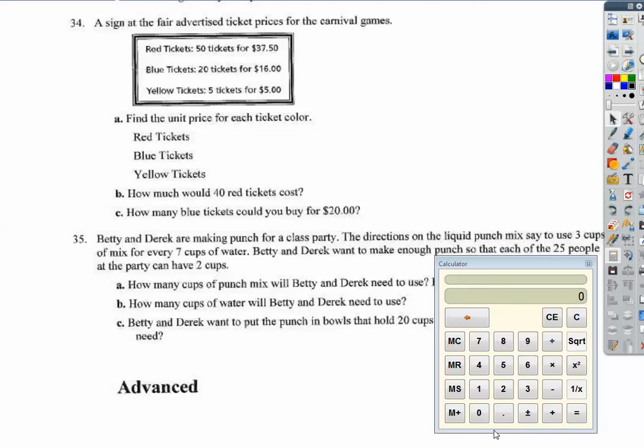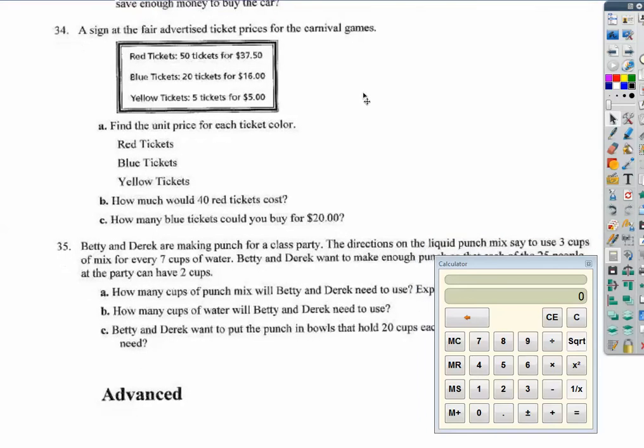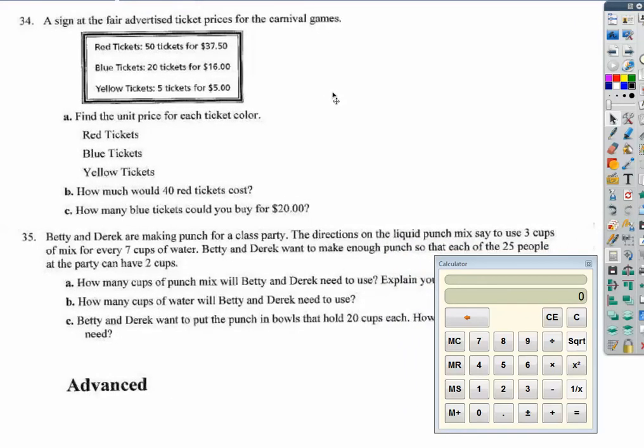Number 34. A sign at the fair advertises ticket prices for the carnival games. We have red tickets, blue tickets, and yellow tickets. We need to find the unit price for each ticket color. So the unit price, we're talking dollars per ticket.